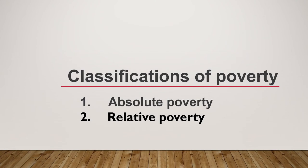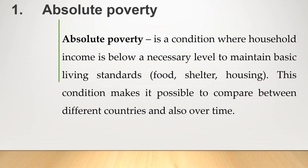Poverty can be classified into two types: first, absolute poverty, and second, relative poverty. Absolute poverty is the condition where household income is below a necessary level for maintaining basic living standards like food, shelter, and housing. These conditions make it possible to compare between different countries or peoples across locations at a single point in time. Absolute poverty is the complete lack of the means necessary to meet people's basic personal needs such as food, clothing, and shelter.